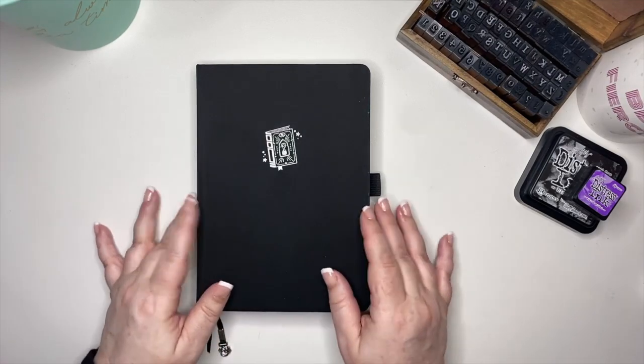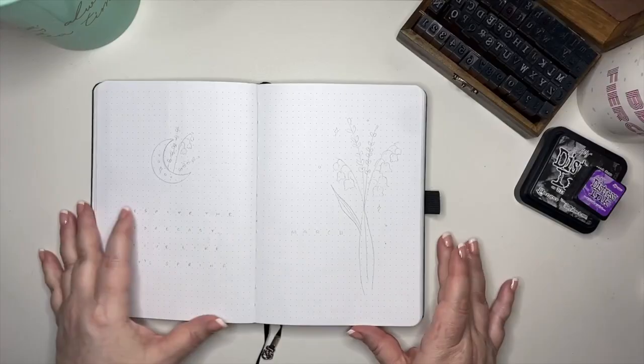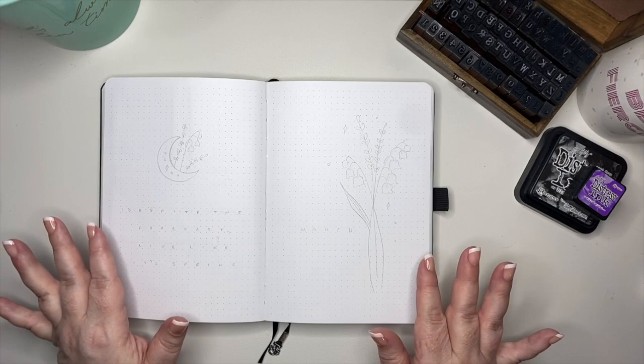Hey y'all, welcome back to Dots and Beyond. My name is Beth. Let's set up Kenny's bullet journal for March 2023. For this month, Kenny has chosen Lily of the Valley and Lavender as his theme.